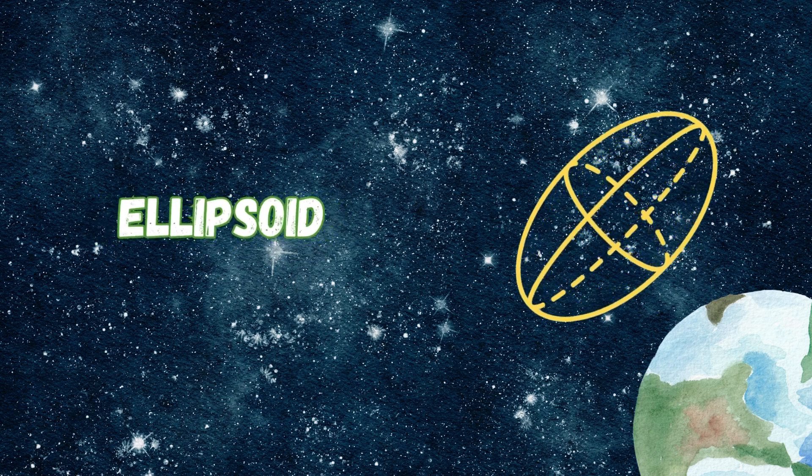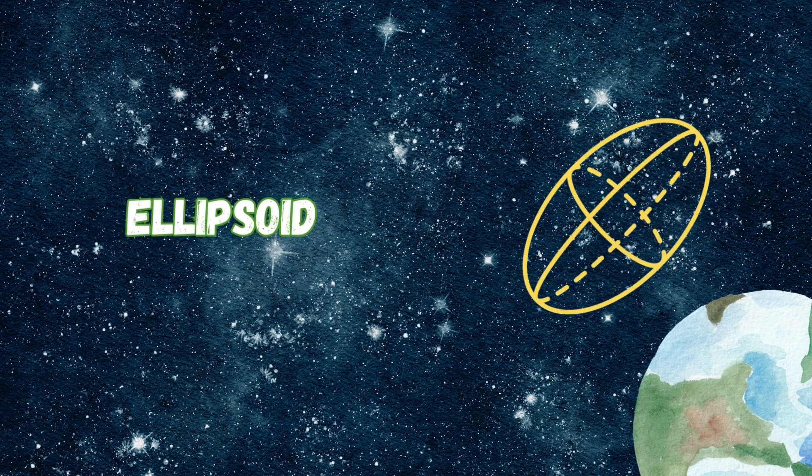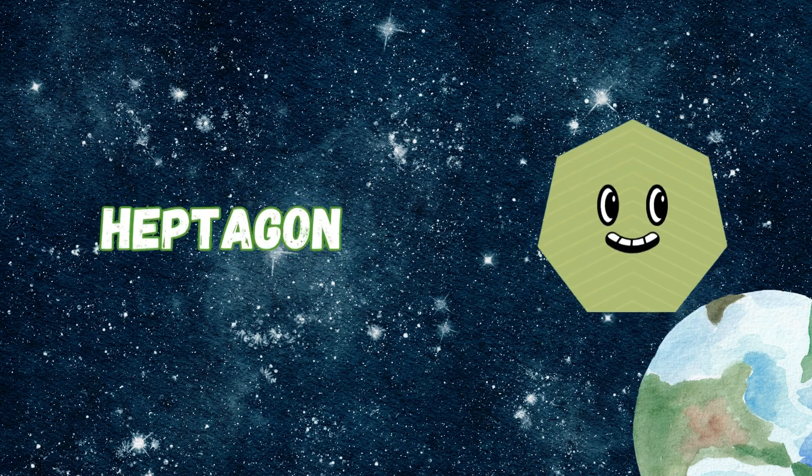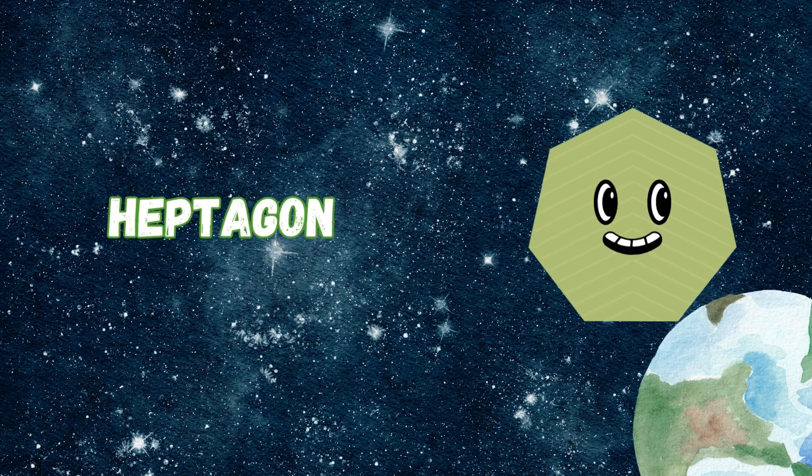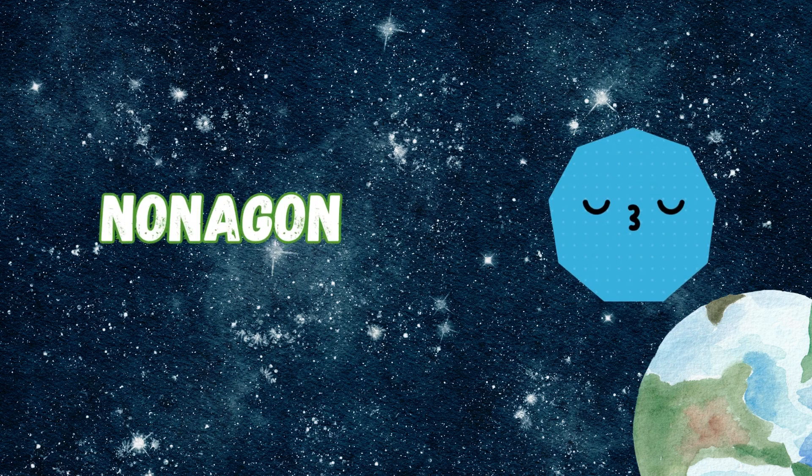Arrowhead is sharp and sleek. It points the way that we should seek. Ellipsoid is stretched in 3D space, a flying shape, full of grace. Heptagon has seven sides. Count them all, it never hides.